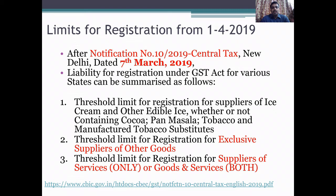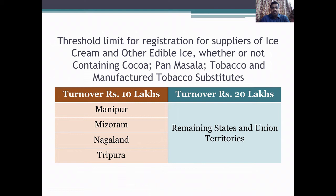The limits for registration from 1st April 2019, following Notification Number 10 of 2019 of Central Tax, New Delhi, dated 7th March 2019, prescribe the following registration threshold limits. There are three different categories. The first is the threshold limit for registration for supplies of ice cream and other edible ice whether or not containing cocoa, paan masala, tobacco, and manufactured tobacco substitutes. For the states of Manipur, Mizoram, Nagaland, and Tripura, the turnover limit is Rs. 10 lakhs. For the remaining states and union territories, the turnover limit is Rs. 20 lakhs.